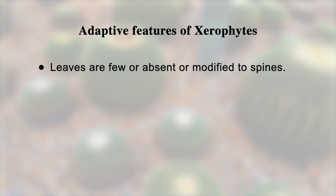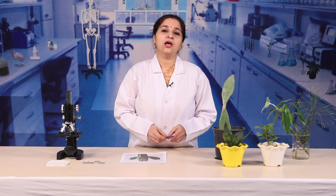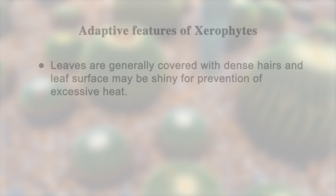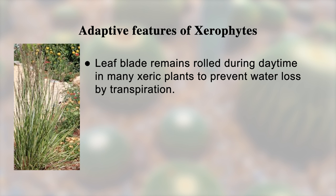Leaves are few, absent, or modified to spines. The petiole is modified into a leaf-like structure. Stem is reduced. These modifications are for conservation of water as these plants grow in scarcity of water. In some cases like cacti and succulents, the stem is flattened like a leaf — it is green and photosynthetic in function, as leaves are reduced to spines. Leaves are generally covered with dense hairs, and the leaf surface may be shiny for prevention of excessive heat.